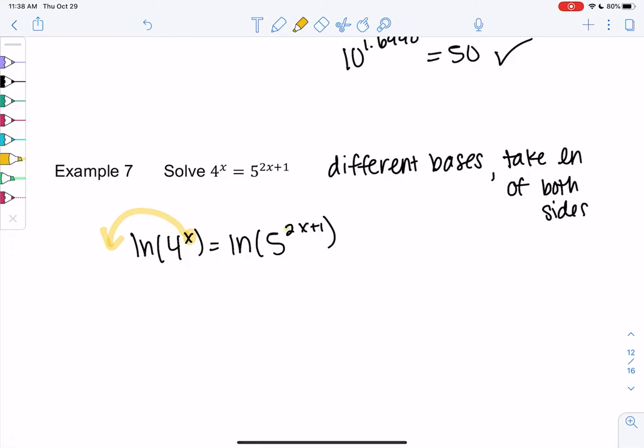It's a little messy here. Left side, we just bring out x. But on the right side, we bring out that whole thing, 2x plus 1. So x times ln of 4 equals 2x plus 1 in parentheses times ln of 5.